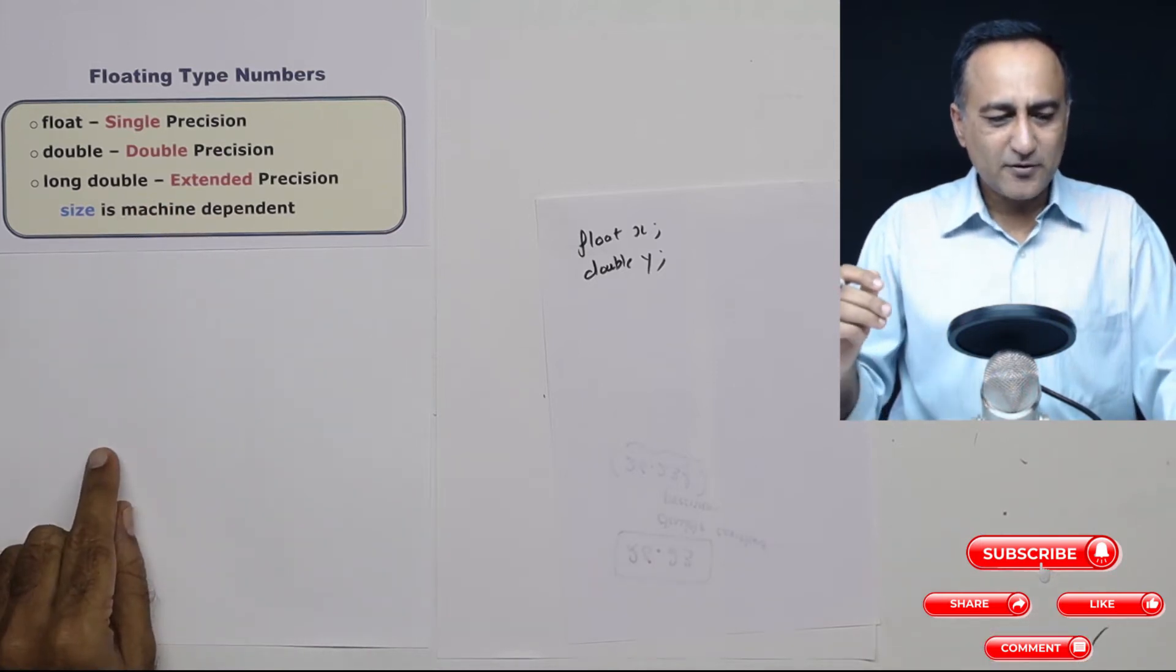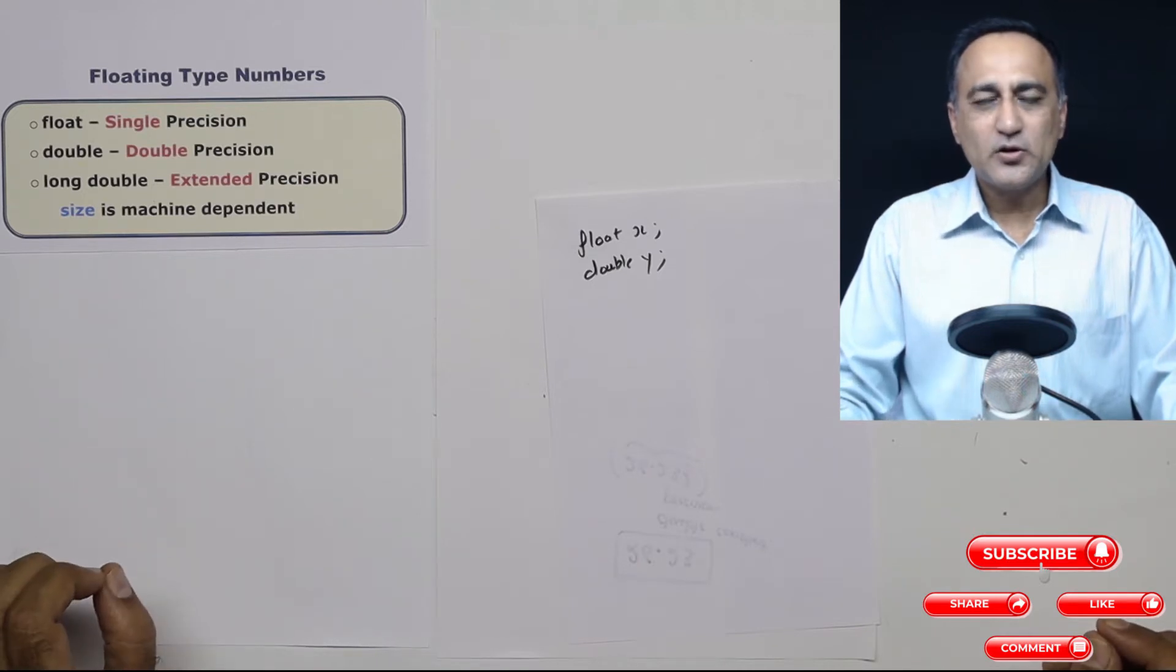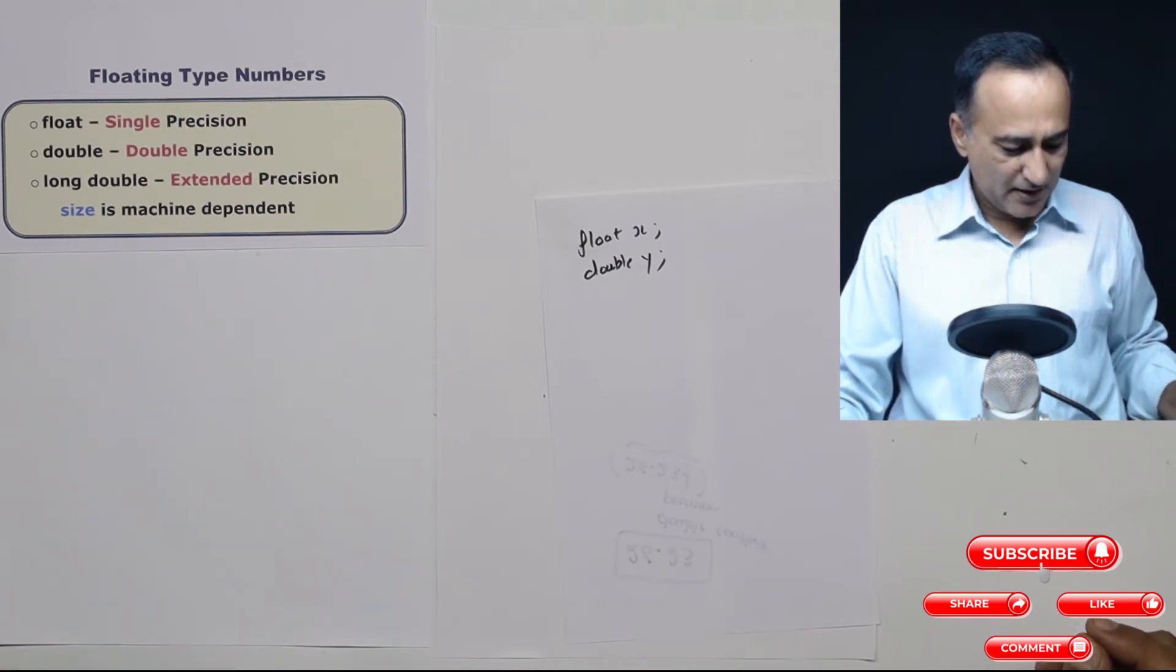Now the size of float and double is not clearly or not at all mentioned in the C specification or the C manual. It is left to the designers of the compilers on which hardware it is operating to decide the size of float and double.